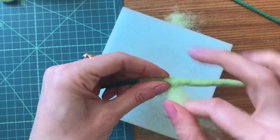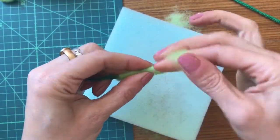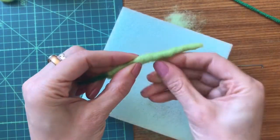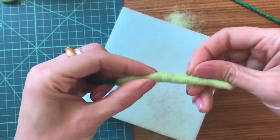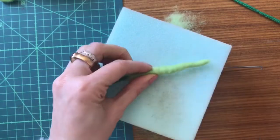I'm just going to wrap some more wool down around that, just at the top end of the tail. And again, needle felt that into place.